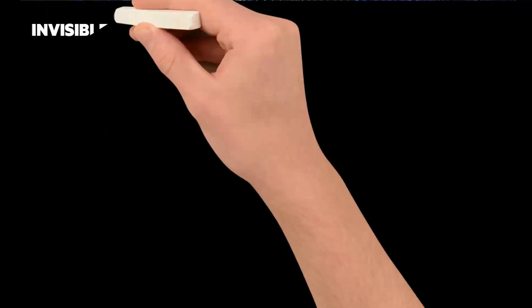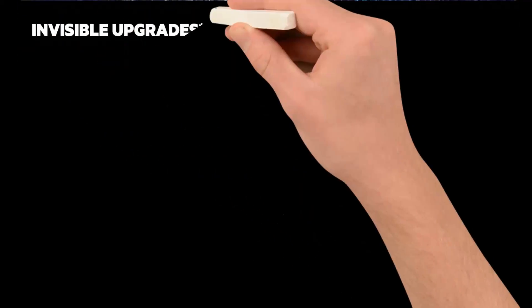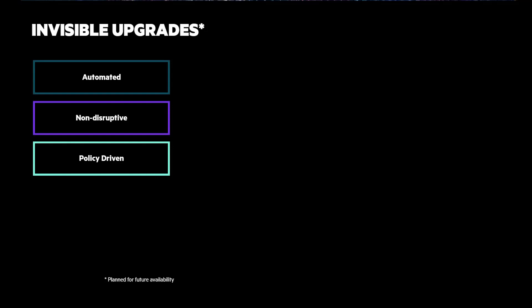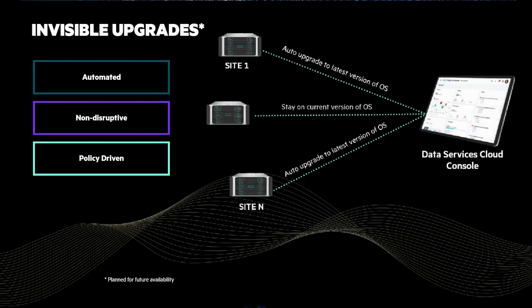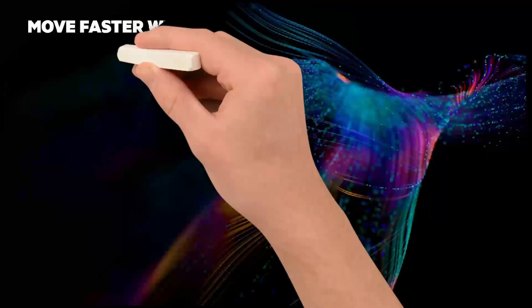And finally, Invisible Upgrades. Later this year, you'll be able to make invisible cloud-delivered software and firmware upgrades that are automated, non-disruptive, and policy-driven. Policies allow you to auto-upgrade to the latest version or lock systems into a particular version.